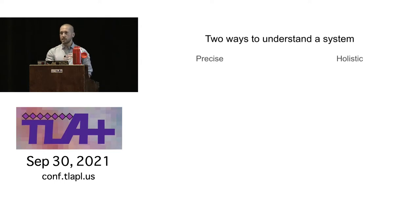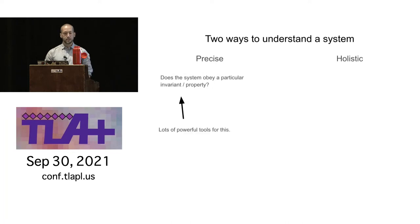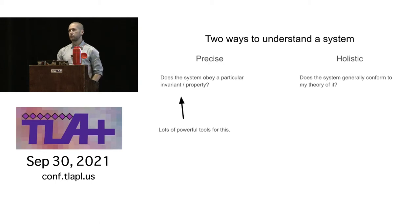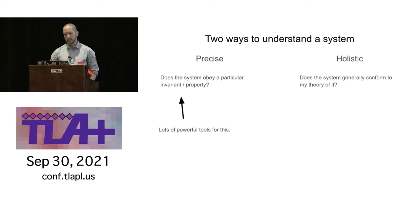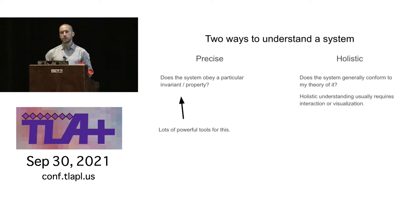On the precise side, we ask really well-defined questions like: does the system obey a particular invariant or property? This is the whole point of TLA+, and there are lots of powerful tools for this. But on the holistic side, we have much vaguer questions like: does the system generally conform to my understanding of it? A holistic understanding requires some interaction or visualization, and for TLA+, there are very few tools for this — mostly prototypes.